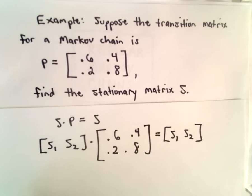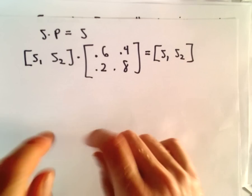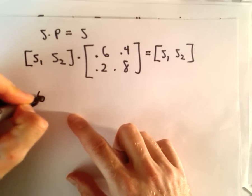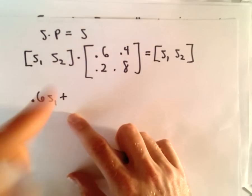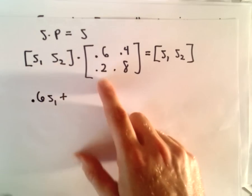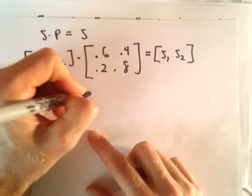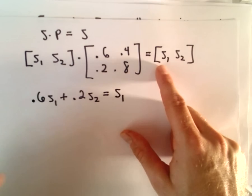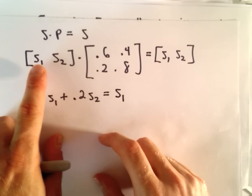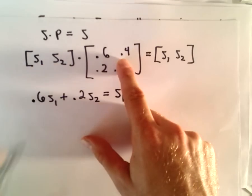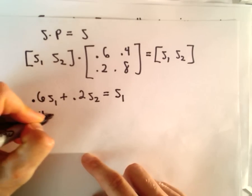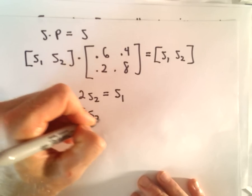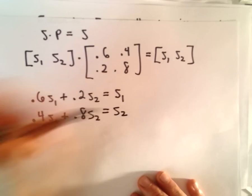This will give us a system of equations to solve. If we do our matrix multiplication, we would have 0.6S₁ plus 0.2S₂, and that's going to equal S₁. Likewise, if we multiply again, we'll have 0.4S₁ plus 0.8S₂, and that's going to equal S₂.